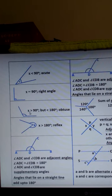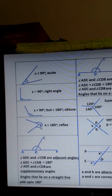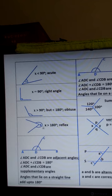So an obtuse angle lies between 90 degrees and 180 degrees. Next is a reflex angle. A reflex angle is more than 180 degrees but less than 360 degrees, so X here is more than 180 degrees but less than 360 degrees.